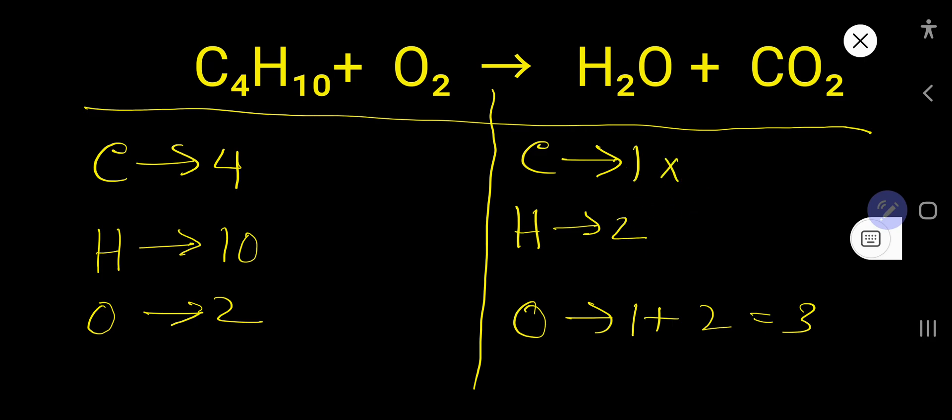So to balance carbon, simply multiply here by 4 that gives you 4. If you multiply by something, that something must come before the atom. This carbon has come from here so you have to place here 4. Now the number of carbon is 4.